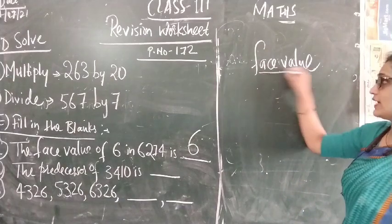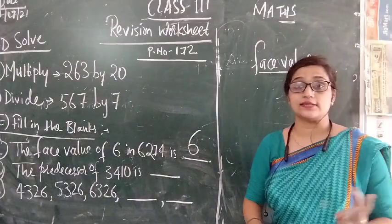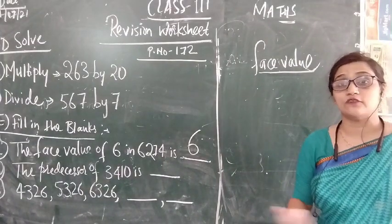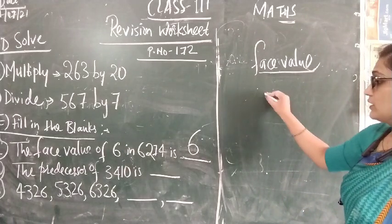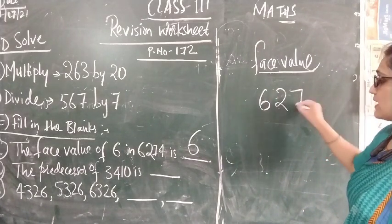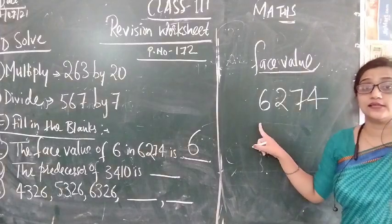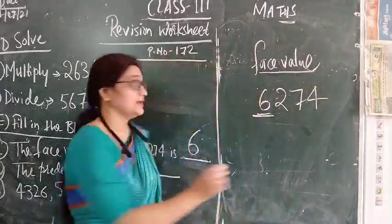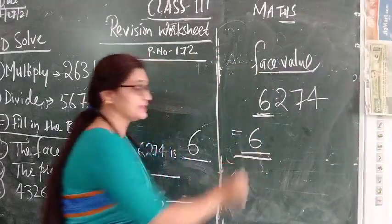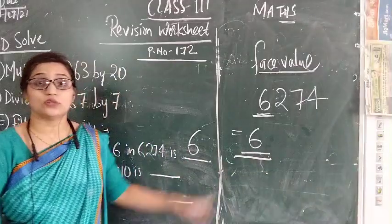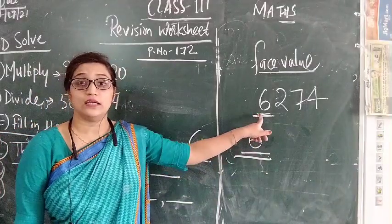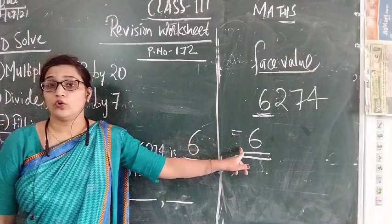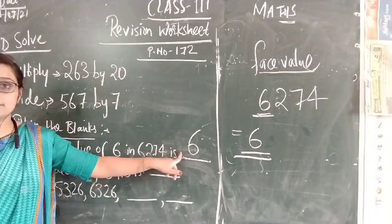What is the meaning of face value? Place value we have seen: ones, tens, hundred, thousand. But face value we have to write that number itself as it is. For example, here given 6274 and they asked the face value of 6. So answer will be that number itself. So the face value of 6 in 6274 is 6 only.